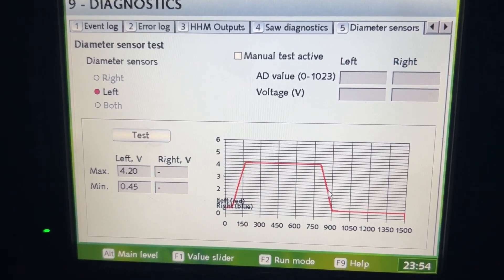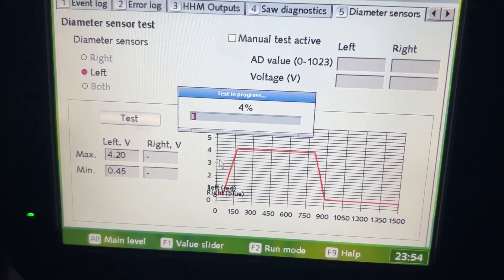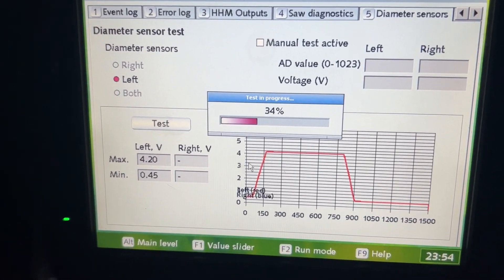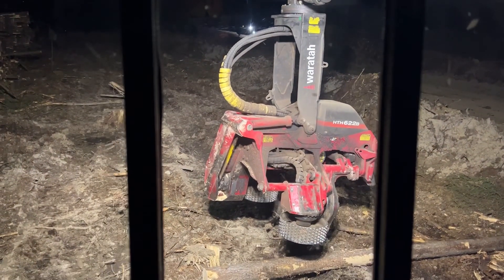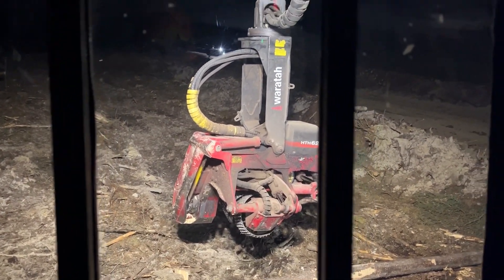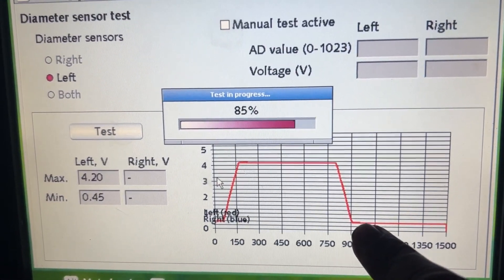This will bring you to this screen here. First thing you need to do is hit the test. Make sure your hydraulics are on and you are at full RPM. Your head will automatically go to full pressure, which gives you this graph here for your diameter sensor.